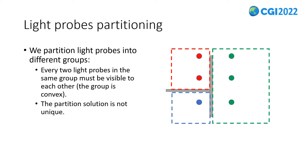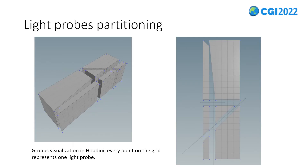The first step in mask baking is to divide the light probes into several groups such that every two probes in the same group are visible to each other — in other words, the group is convex. In practice, we first randomly choose a free probe in the scene and assign one group to it, then dilate the group to include adjacent probes as long as the group remains convex. This process repeats until no more probes can be added, then we choose another free probe and repeat until there are no free probes left. This picture shows the visualization of groups in Houdini; for most scenes the partition solution is not unique.